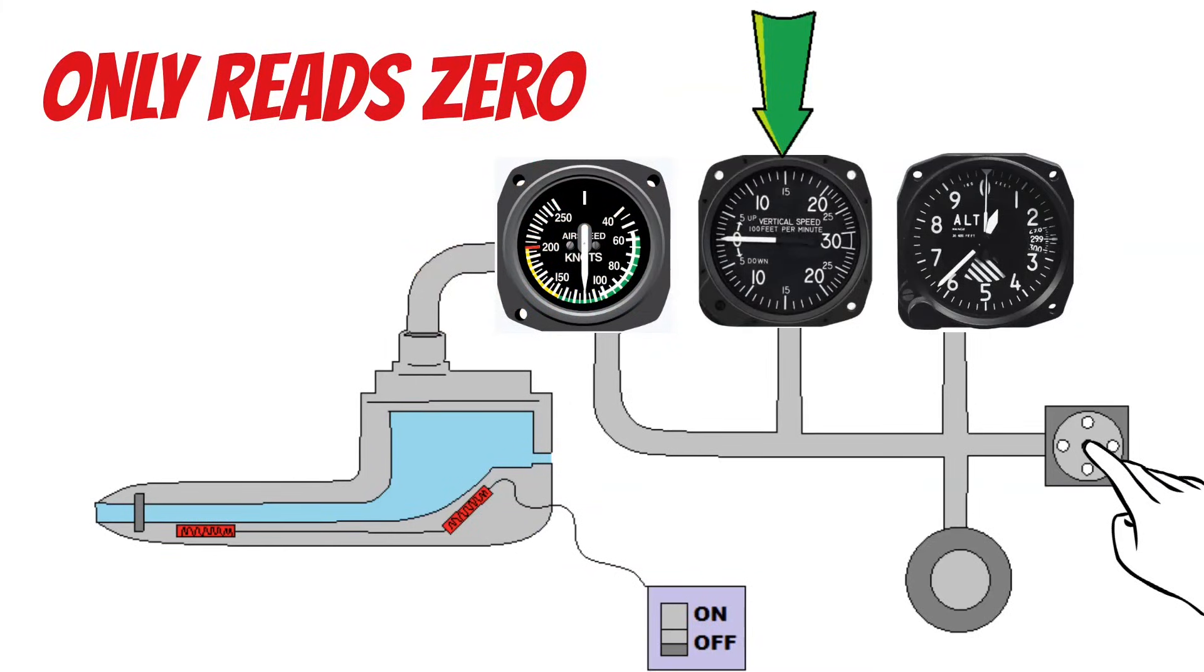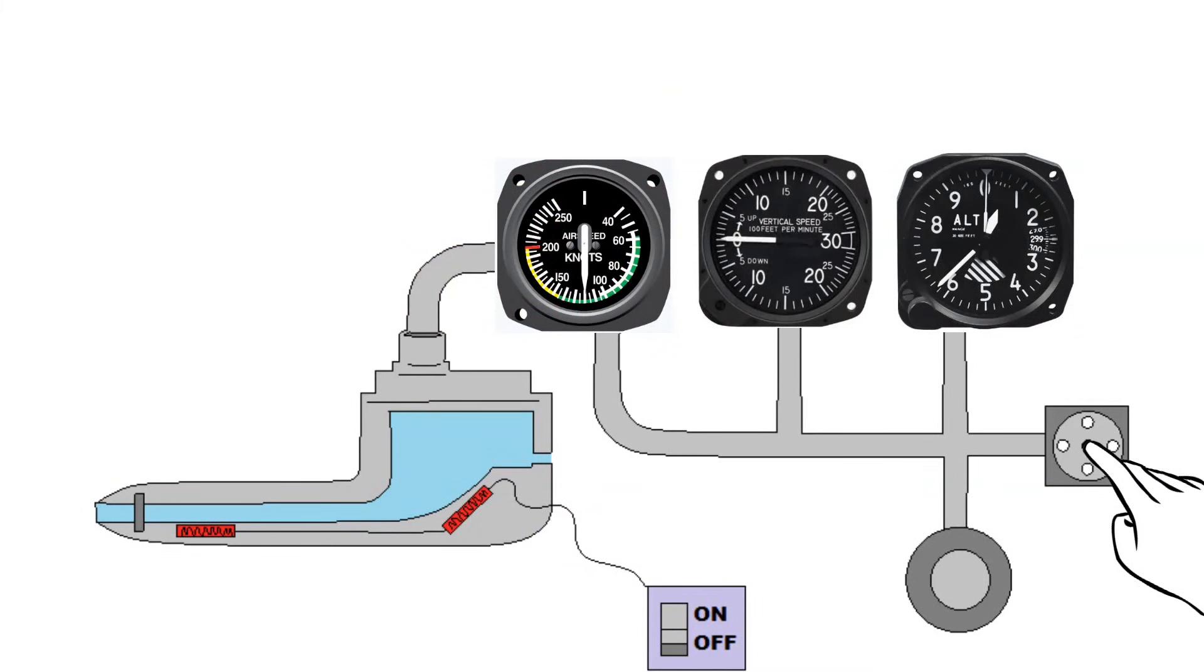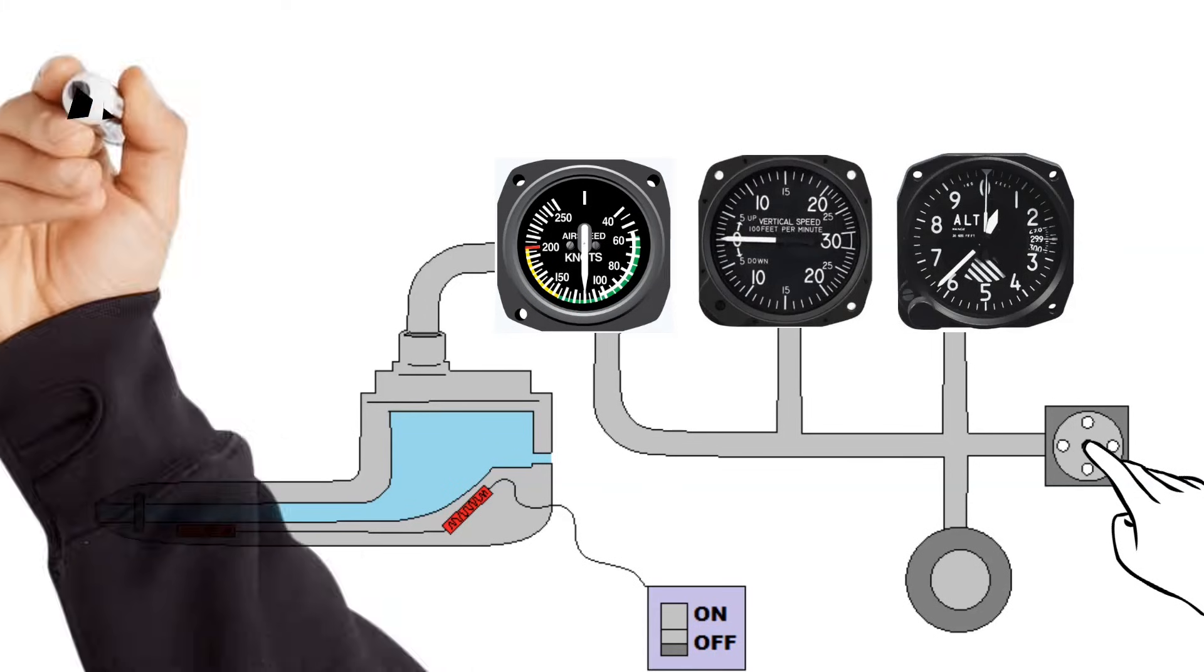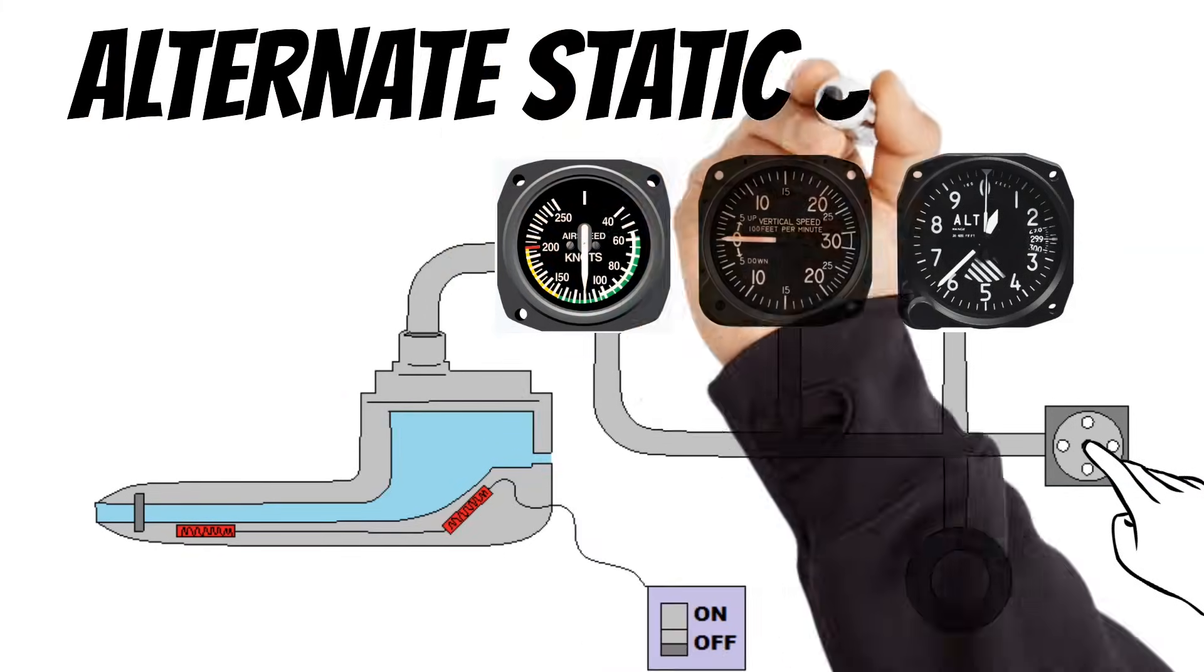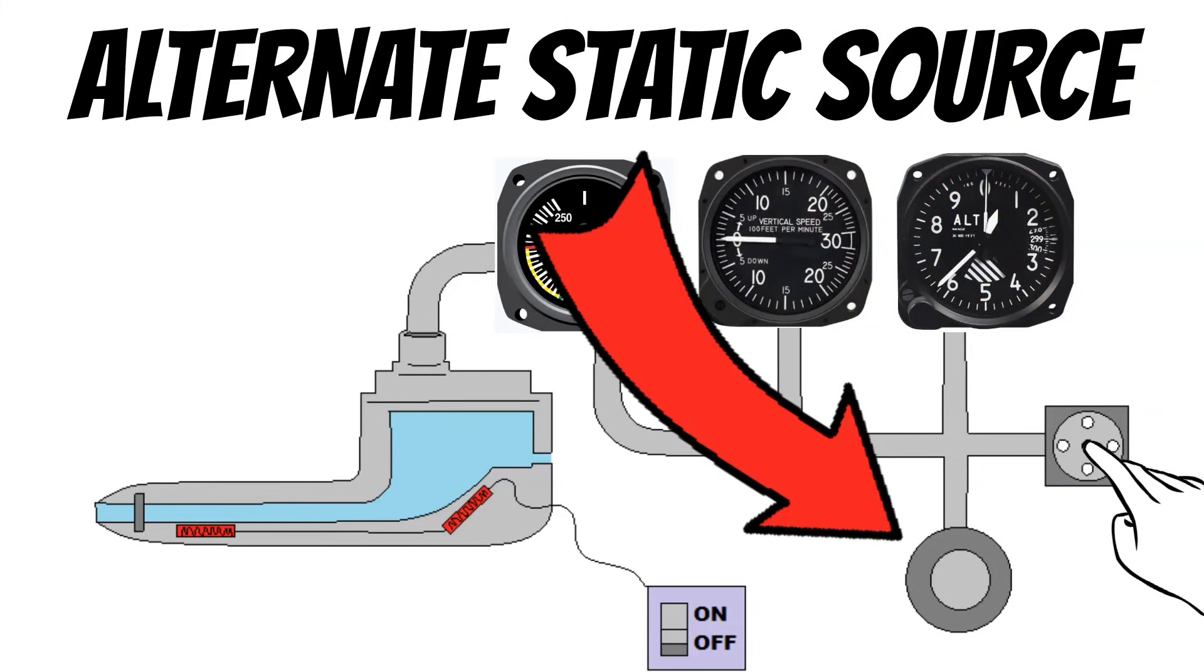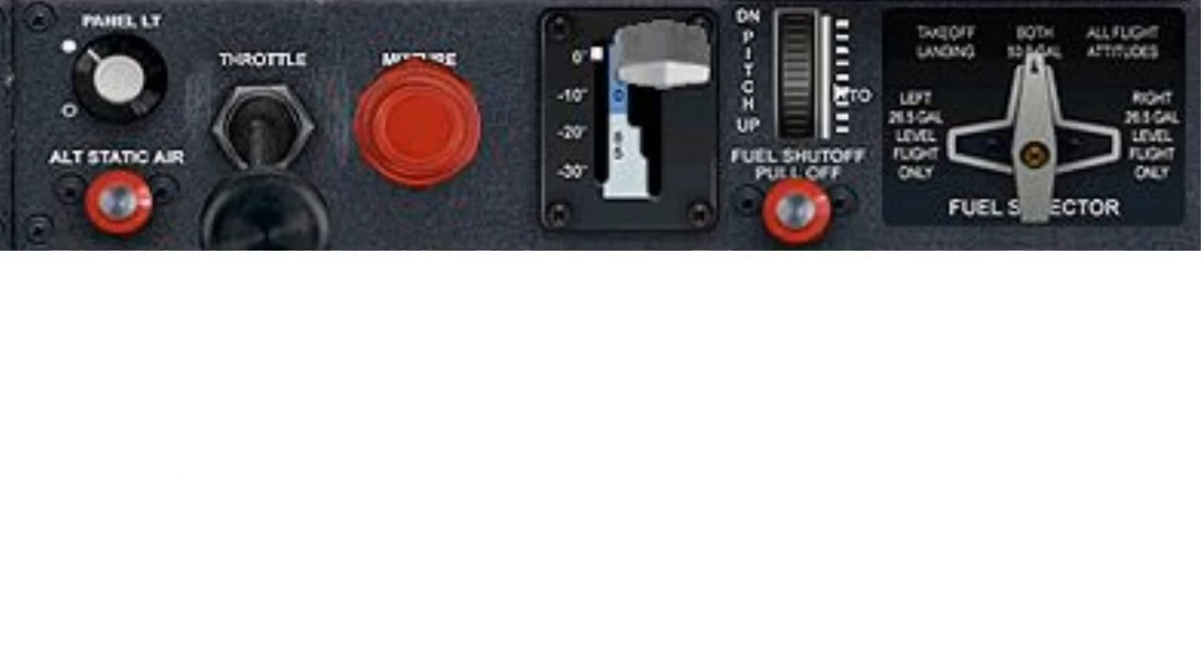If you're lucky enough to have a clogged static port, I do have some good news for you though. On most newer training airplanes, they have something called an alternate static source. Typically, this is an alternate static port that's on the inside of your cockpit. And you can select this alternate static port by flipping a switch labeled alternate static on most airplanes.